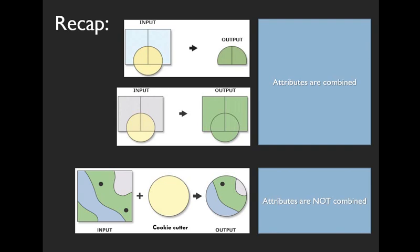When clipping or erasing, attributes are not combined. Only the attributes of the first input are carried forward to the output. The cookie cutter shape only defines the boundary for clip or erase functions.